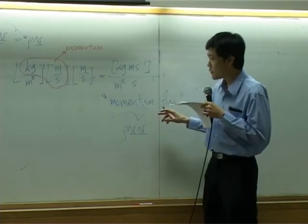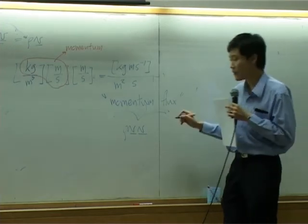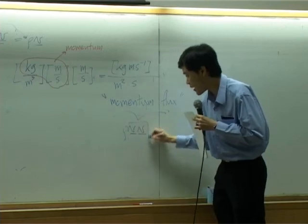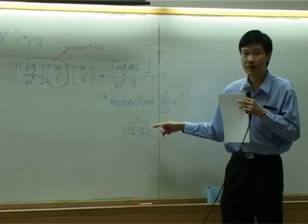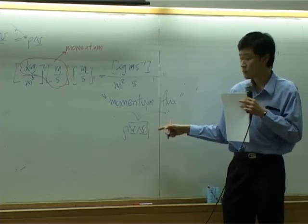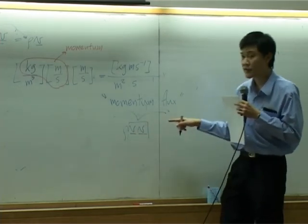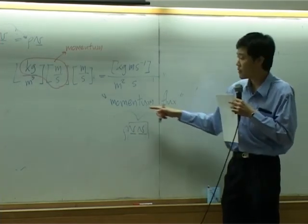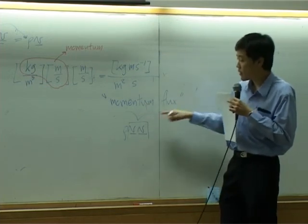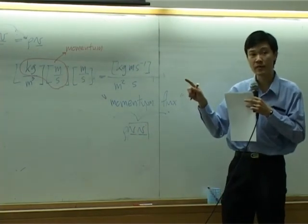However, if you look at something like this, I told you from last time that whenever you have two vectors written side by side, by itself, it's a tensor. This one is a tensor. So rho V V is considered as a tensor describing momentum flux. So what is the difference between rho V V and tau? Tau is also considered as momentum flux.